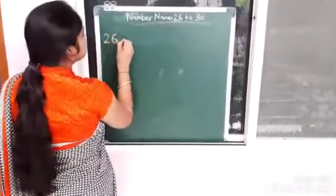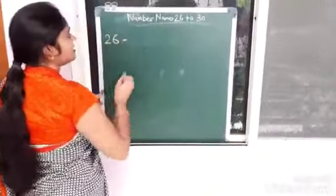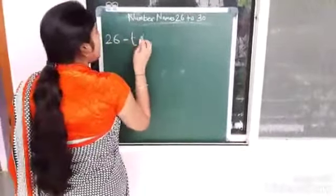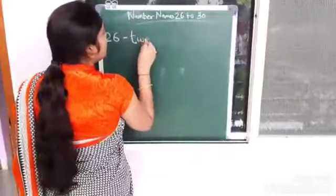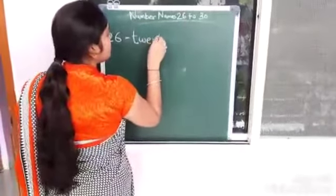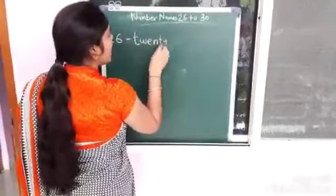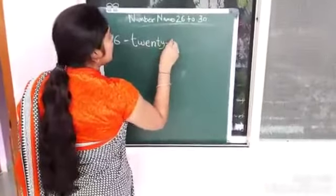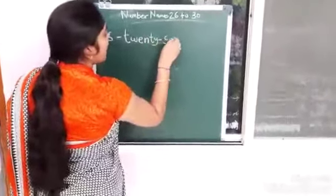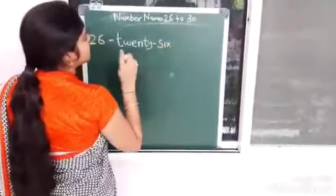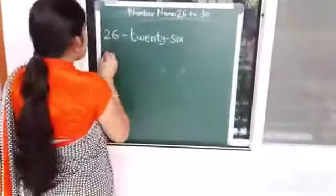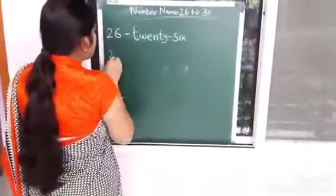So write down here, 26. T-W-E-N-T-Y S-I-X. Twenty Six. 26, okay? Repeat with me.